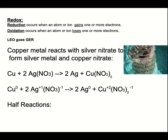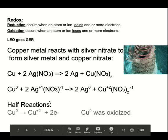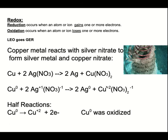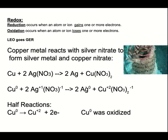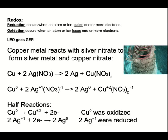Half reactions — let's see what changed. Copper went from zero up to plus two, so it was oxidized; it lost two electrons. Silver also changed: it went from plus one down to zero — it was reduced, literally reduced from plus one down to zero. Two electrons were lost by the copper, and the two silvers each gained one.